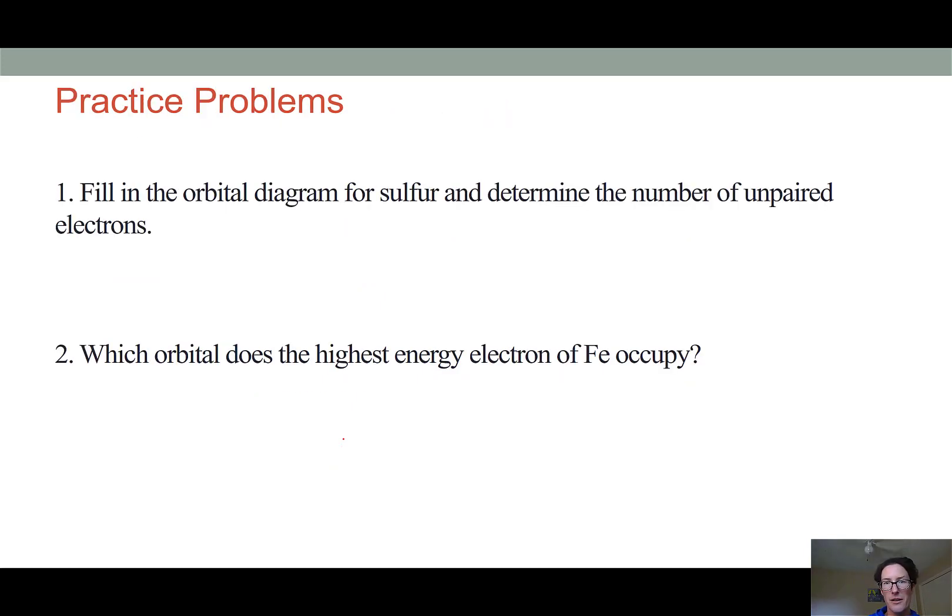So to practice the concepts that you've learned in this video, I'd like to see you fill in an orbital diagram for sulfur and determine how many of its electrons would be unpaired. So here's just a rough sketch out for the orbitals that would be involved. And so you can fill this in with the up and down half arrows. Another problem that you can think about is how to apply all of these electron energies to the periodic table. And tell me, for an iron atom, which orbital has the highest energy electron?